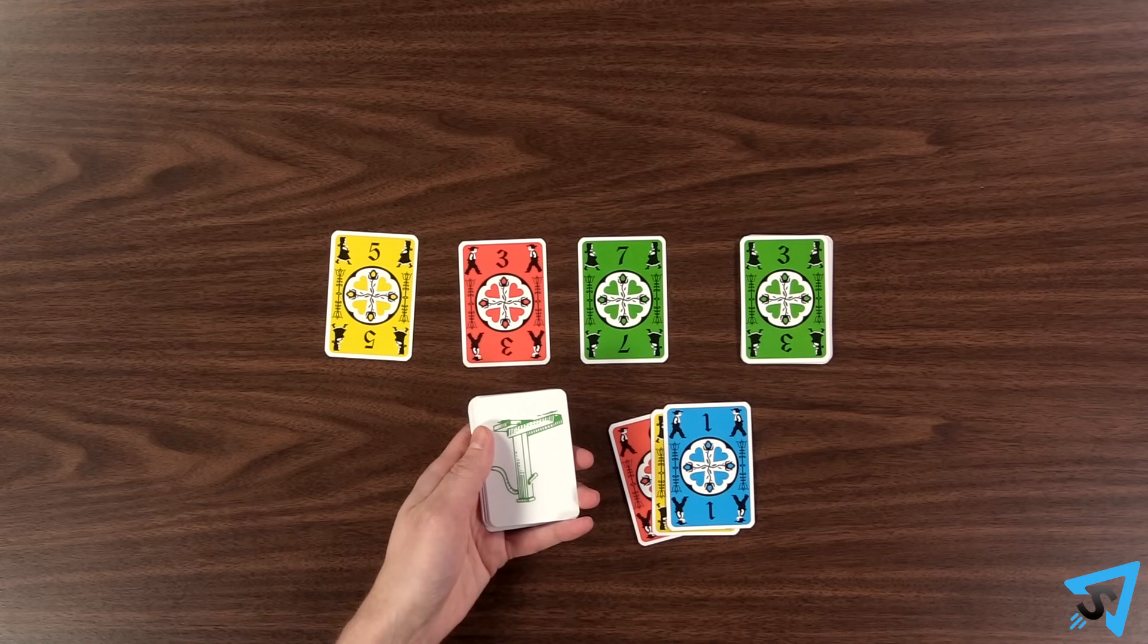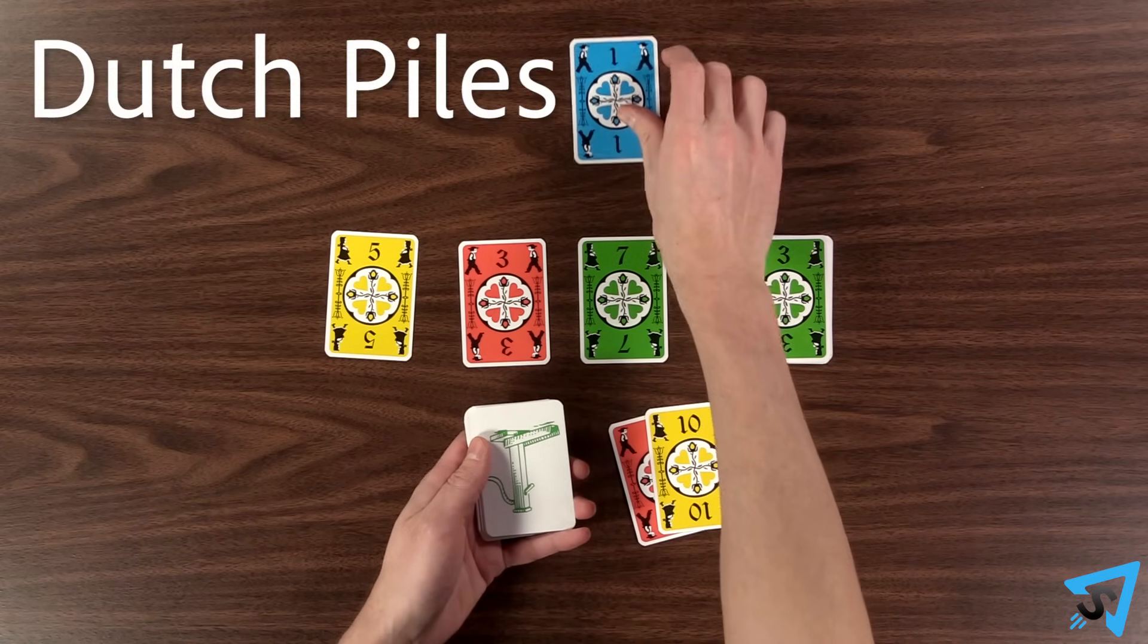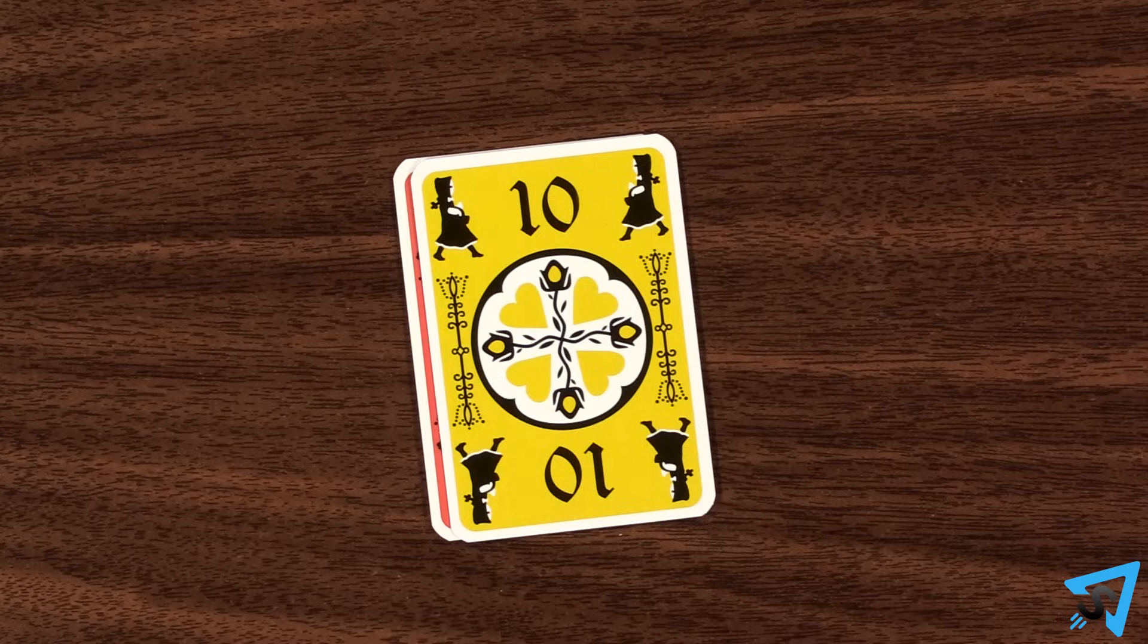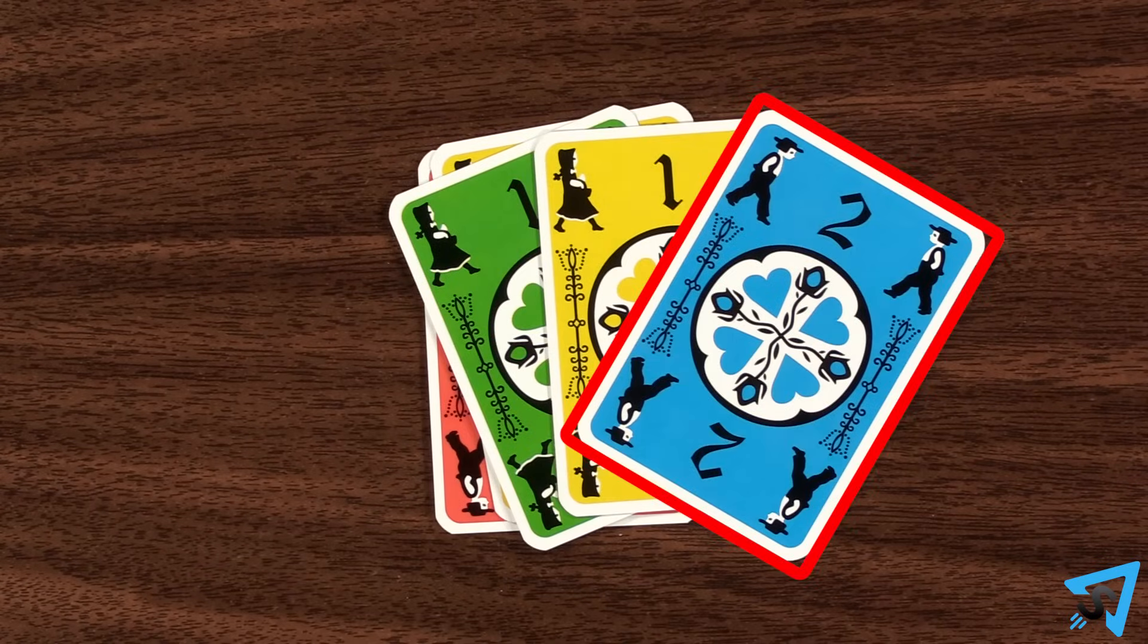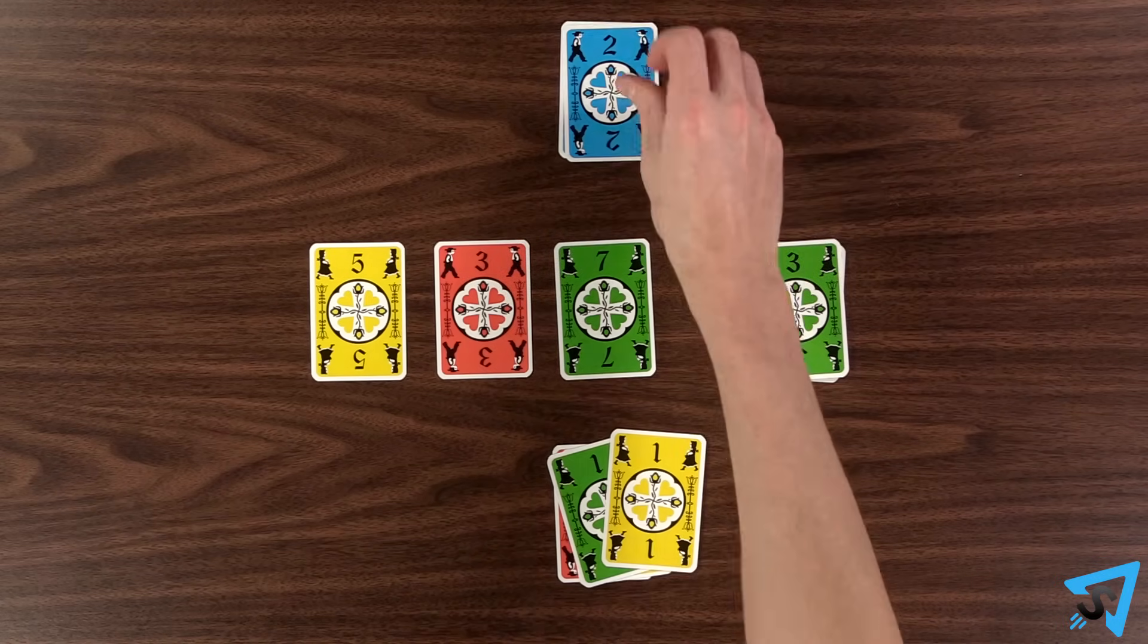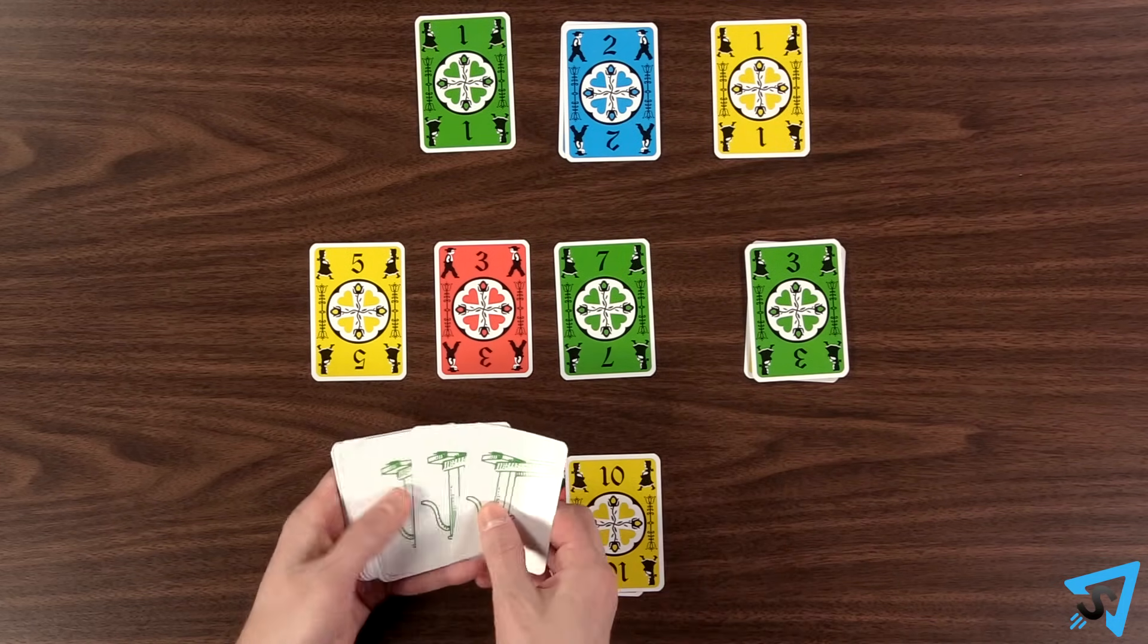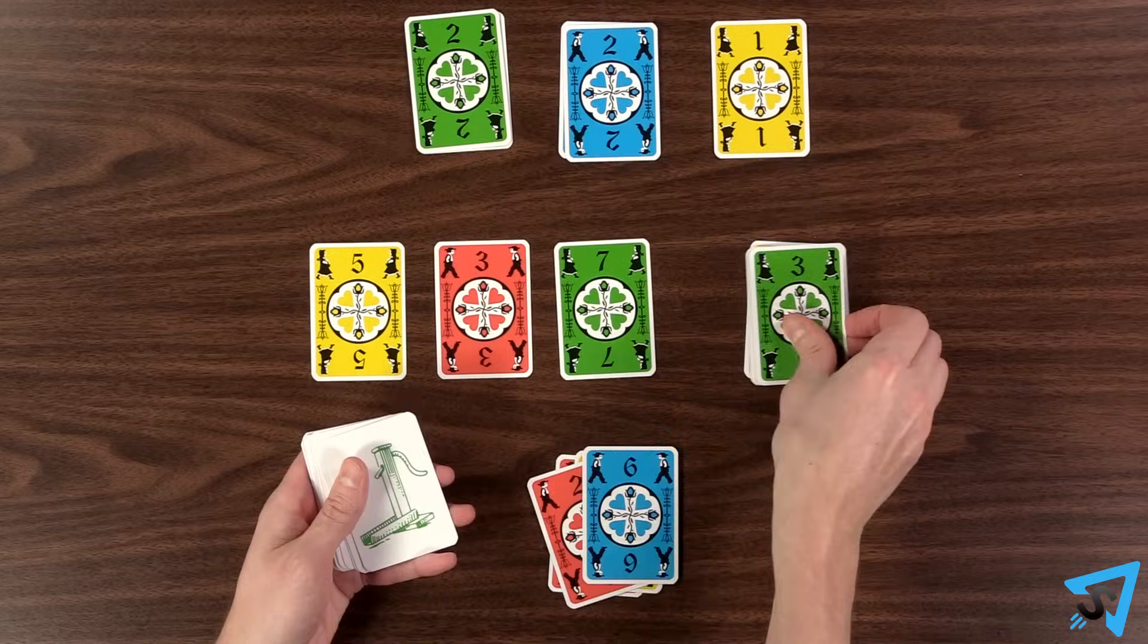You may place any exposed number one card to the center play area to form a new dutch pile. An exposed card is the face-up topmost card of a pile so long as no card is on top of it. You may play an exposed number card of the same color that is next in sequential order to a dutch pile on top of that dutch pile.